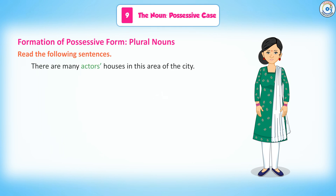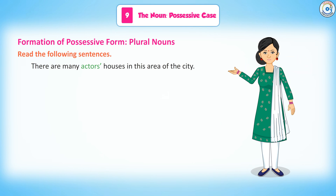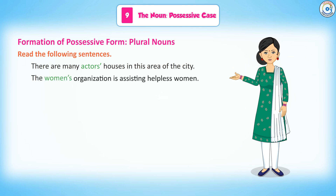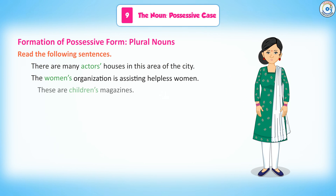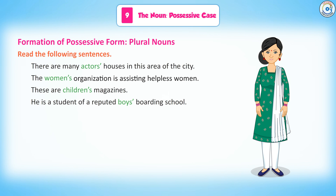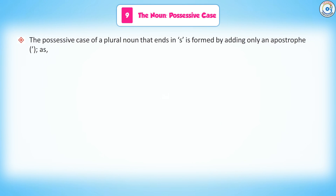Formation of Possessive Form — Plural Nouns. Read the following sentences: There are many actors' houses in this area of the city. The women's organization is assisting helpless women. These are children's magazines. He is a student of a reputed boys' boarding school. The possessive case of a plural noun that ends in S is formed by adding only an apostrophe.